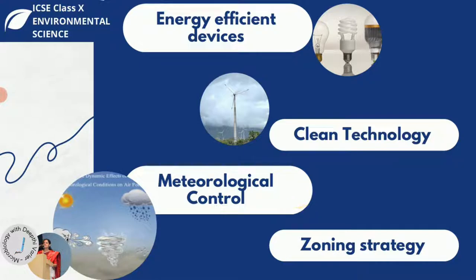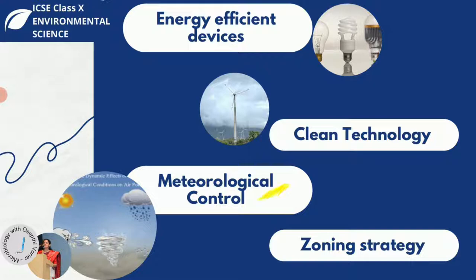Meteorological control refers to using local weather patterns to manage air pollution. How much a pollutant concentrates in a particular area depends on weather conditions. Studying weather patterns of an area helps control pollution — for example, if a region has calm air, pollutants won't disperse and will settle locally. Weather data can help identify the source of pollutants, predict air pollution events like inversion, and computer models can be used to predict air quality if an industry is set up in a particular region.